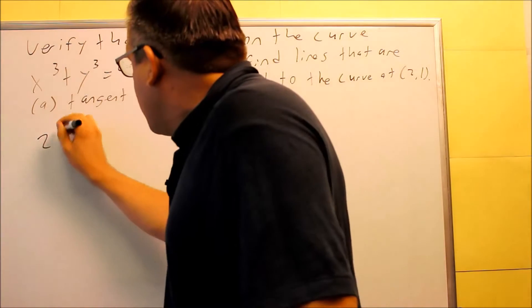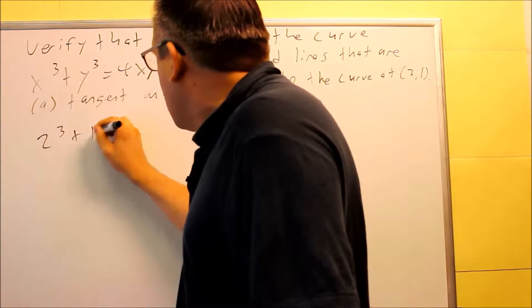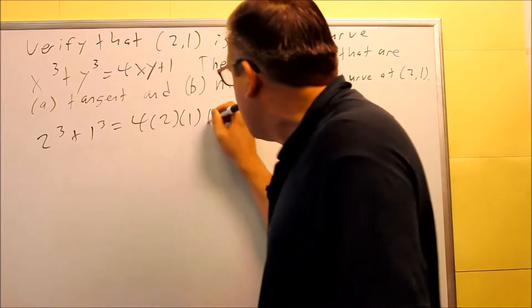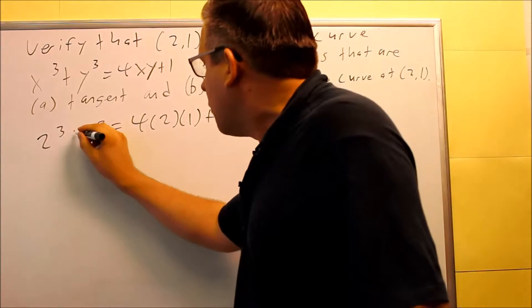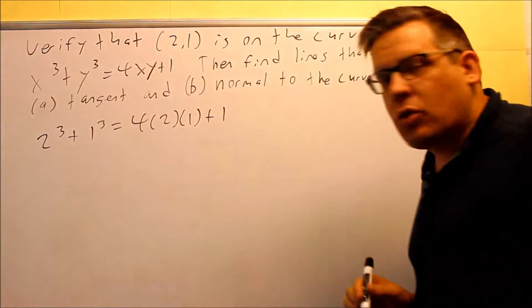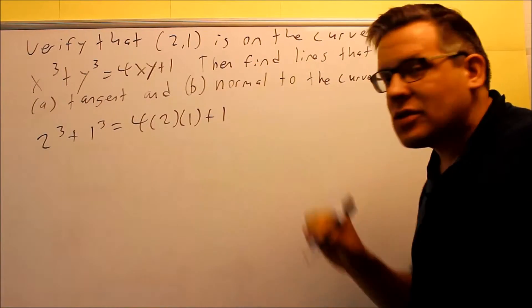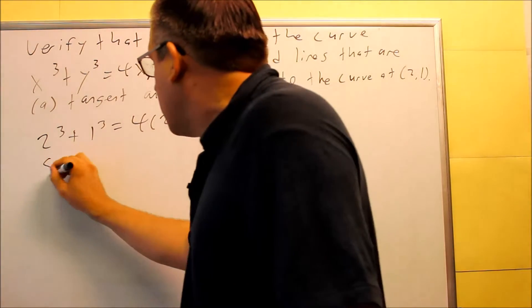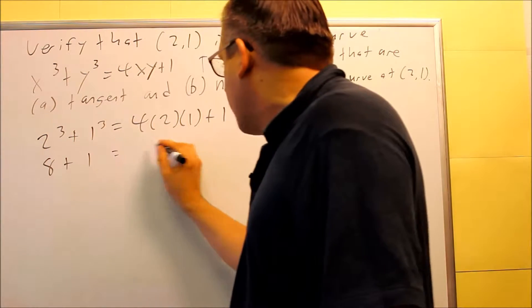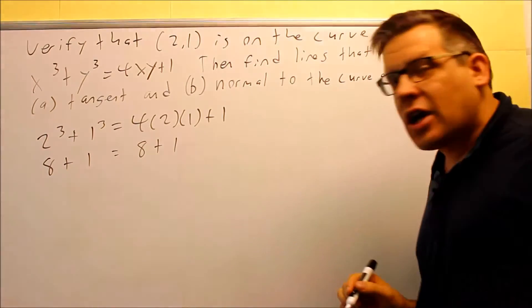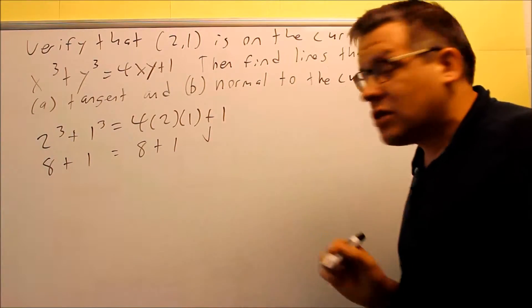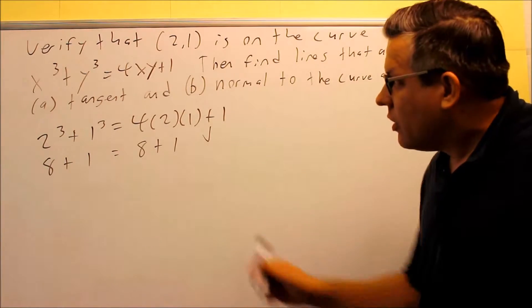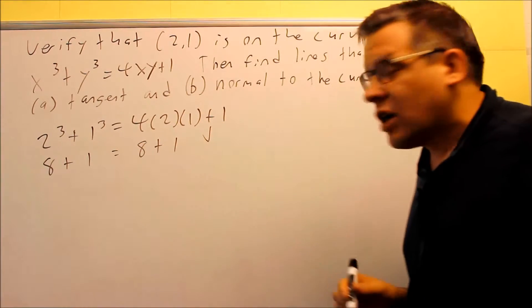So let's try that one. We do 2 cubed plus 1 cubed is going to equal 4 times 2 times 1 plus 1, and we're going to just work out both sides. If you get both sides are equal, then that verifies that 2,1 is on that curve. So this is 8 plus 1, and then this over here is also 8 plus 1. We get exactly the same thing on both sides, so we can say yes, 2,1 for sure is on there.